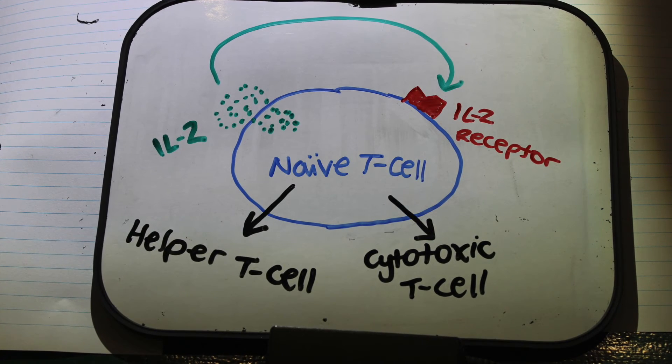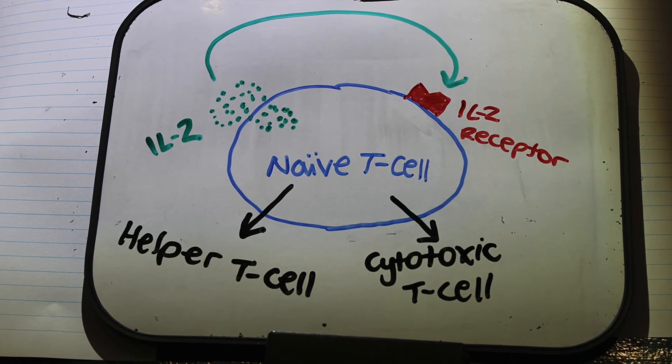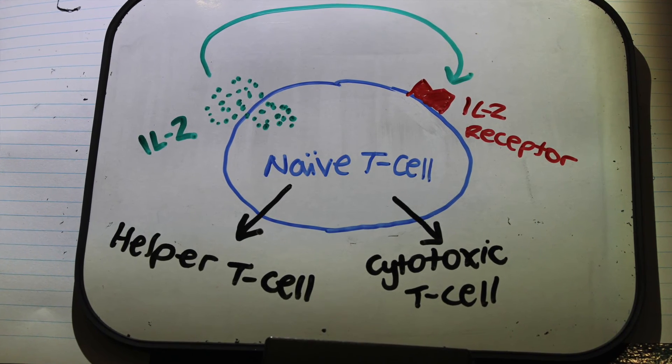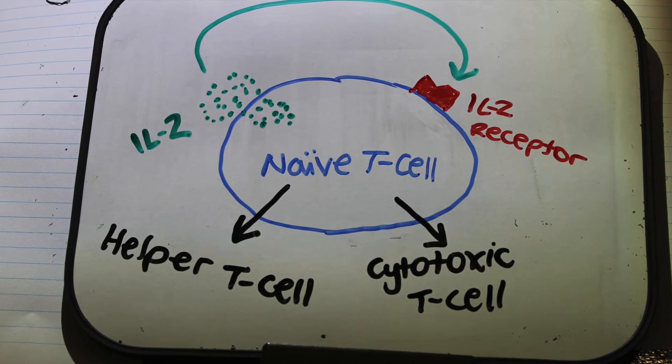Lymphocytes stimulated by antigen receptors alone will fail to produce cytokines, are unable to sustain proliferation, and will often undergo apoptosis or become unresponsive to further stimulation.